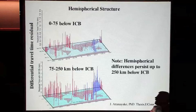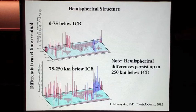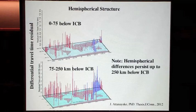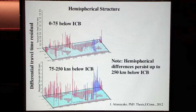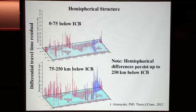This slide summarizes our most recent study on inner core hemispherical structure — one of about a half dozen confirming studies. Our particular study deconvolved the source time function of earthquakes, enabling more accurate differential travel time measurements. Blue means fast, red means slow. The eastern hemisphere is fast and the western hemisphere is slow in the inner core, and these differences persist at least down to 250 kilometers below the inner core boundary.